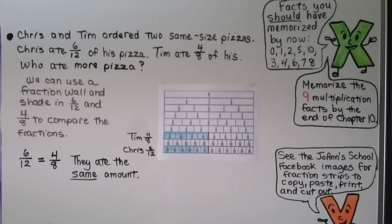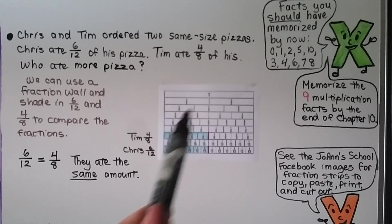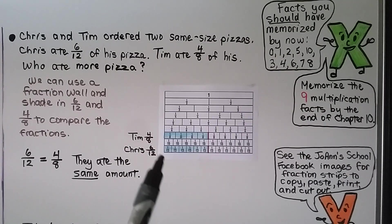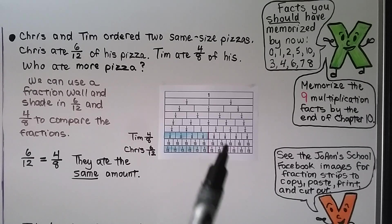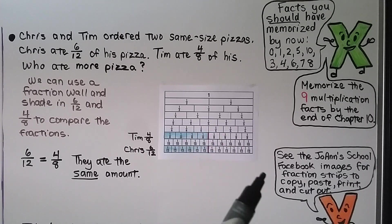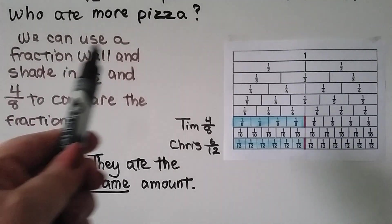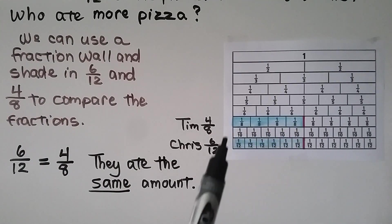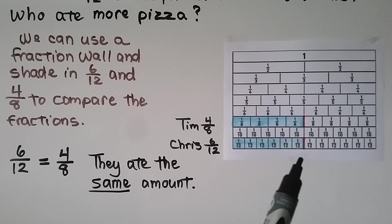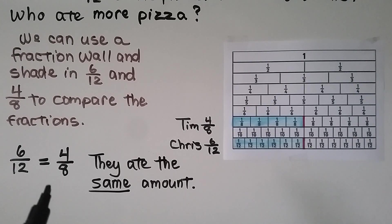Chris and Tim ordered two same-size pizzas. Chris ate six-twelfths of his pizza. Tim ate four-eighths of his pizza. Who ate more pizza? We can use a fraction wall and shade in six-twelfths and four-eighths to compare the fractions. Shading in the fraction wall, we can see they both are the same length. Four-eighths is the same length as six-twelfths. Six-twelfths is equal to four-eighths. That means Chris and Tim ate the same amount.